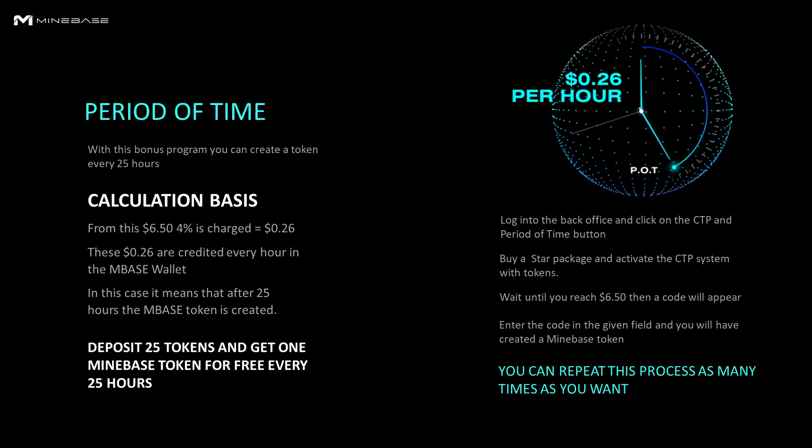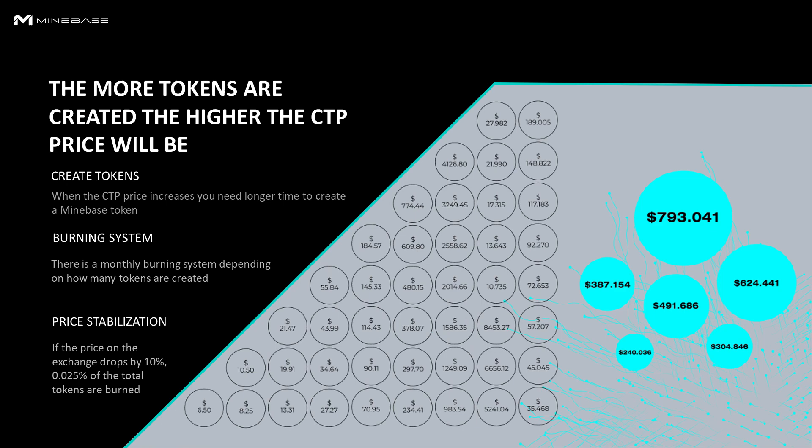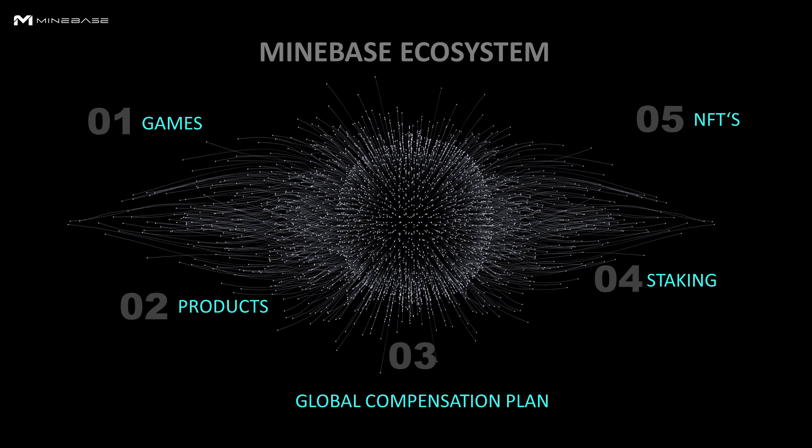There is an algorithm in our CTP system. There is a monthly burn system depending on how many tokens are created, and we also have a price stabilization mechanism. If the price on the stock exchange falls by 10%, 0.025% of the total tokens will be burned. We are creating step by step our ecosystem with games, NFTs, products, and staking.